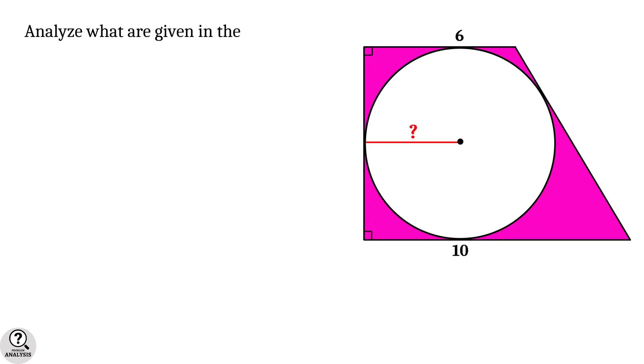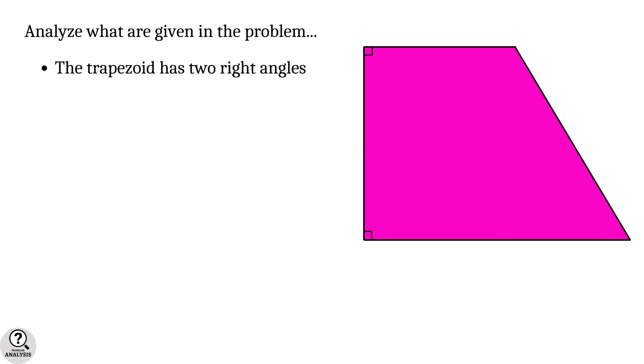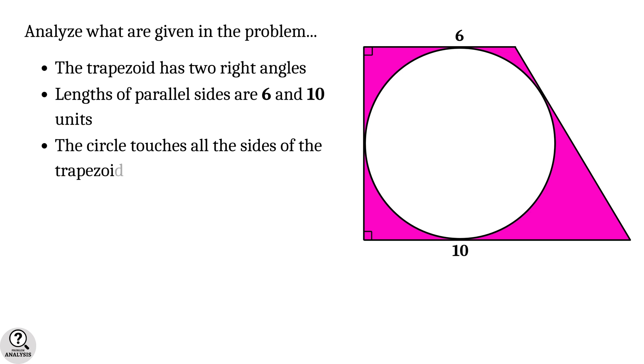First let's analyze what are given in the problem. First of all the trapezoid has two right angle corners. Secondly length of the parallel sides are 6 and 10 units. And finally the circle touches all the sides of the trapezoid.